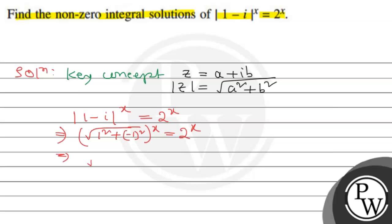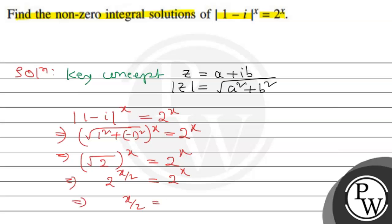This equals square root of 1 squared plus 1 squared, that is square root of 2, whole to the power x equals 2 to the power x. So 2 to the power x over 2 equals 2 to the power x. Therefore x by 2 equals x.